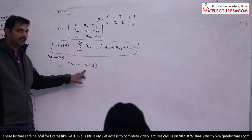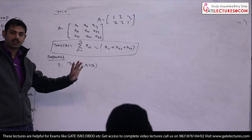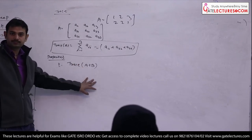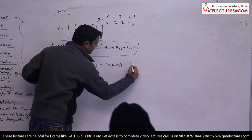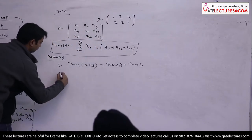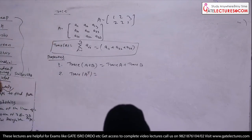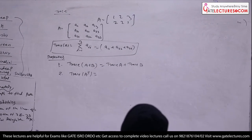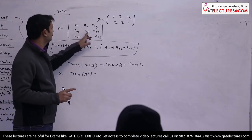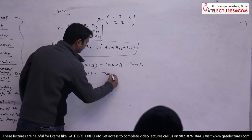Here A and B are square matrices. If you find trace of A plus B, it can be split into two parts: trace of A plus trace of B. Trace of A transpose is the same as trace of A, because when you take the transpose of a matrix, the diagonal never changes — the diagonal remains the same. So trace of A transpose equals trace of A.